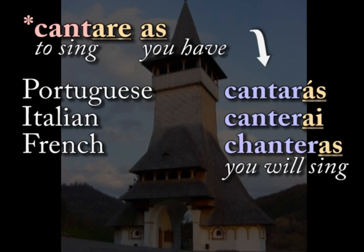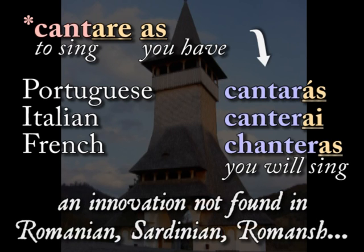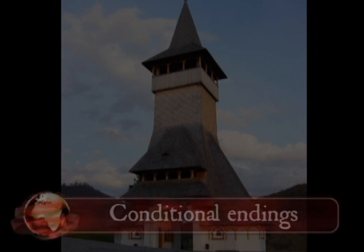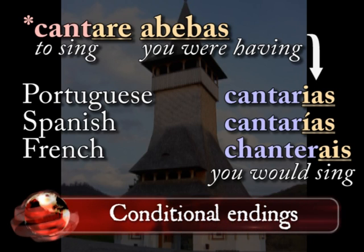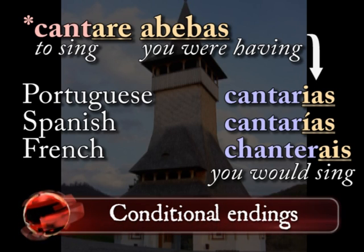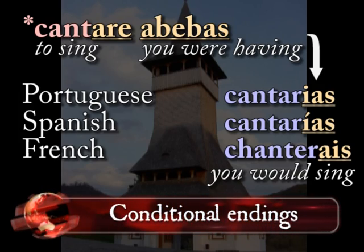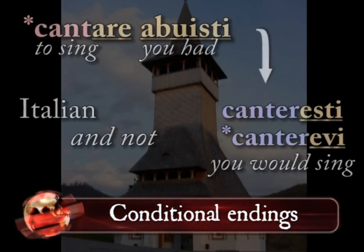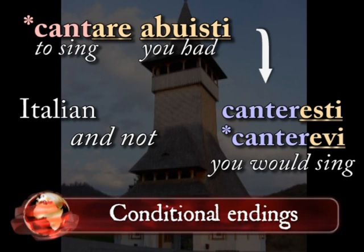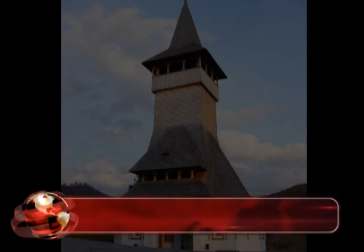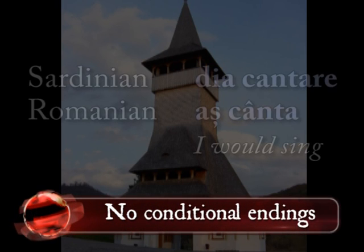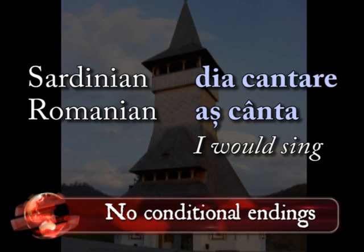Western Romance languages have conditional endings that work a lot like the future indicative endings that attached the verb for 'have' to the end of an infinitive. These are for actions someone would do. The imperfect of 'have' is used in France and Iberia. The preterite of 'have' is used in Italy. Other languages, including Romanian and Sardinian, build phrases or use the imperfect indicative to get the same conditional meaning.